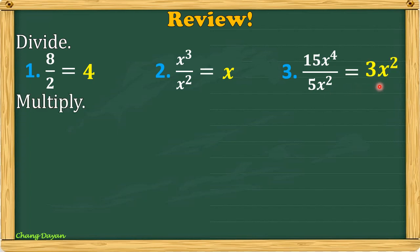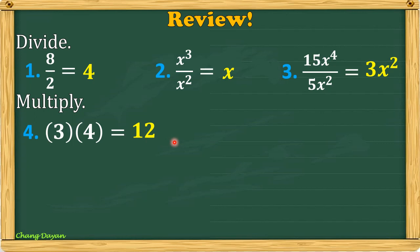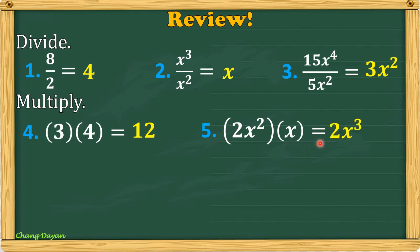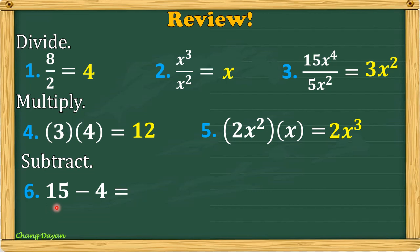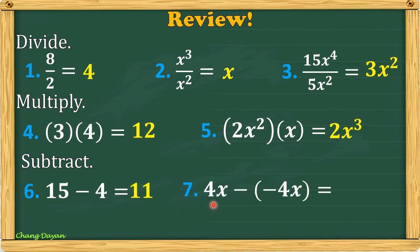Now let's multiply: 3 times 4 is 12. 2x squared times x gives you 2x cubed. Number 6: 15 minus 4 is 11. And 4x minus negative 4x — the answer here is 8x.